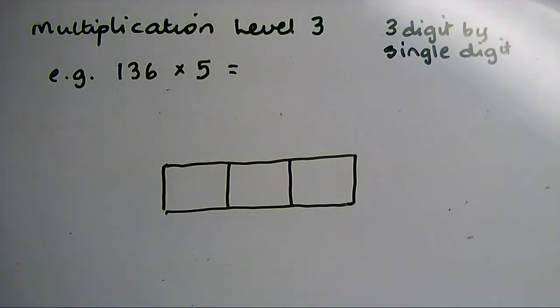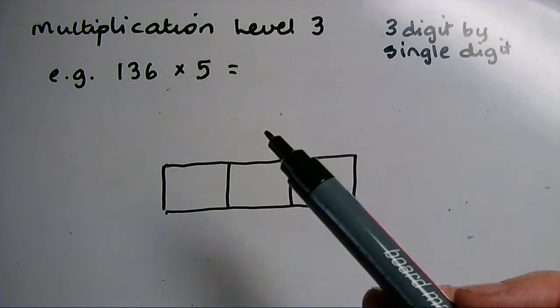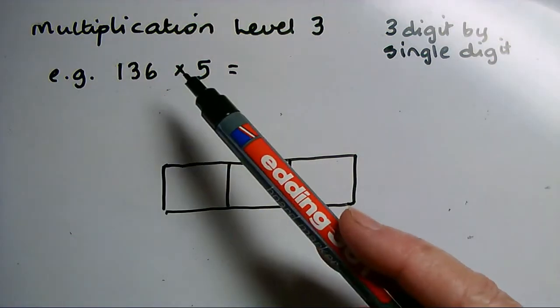Okay, this time I'm going to multiply a three-digit number by a single digit. So the sum I'm going to do is 136 multiplied by 5.